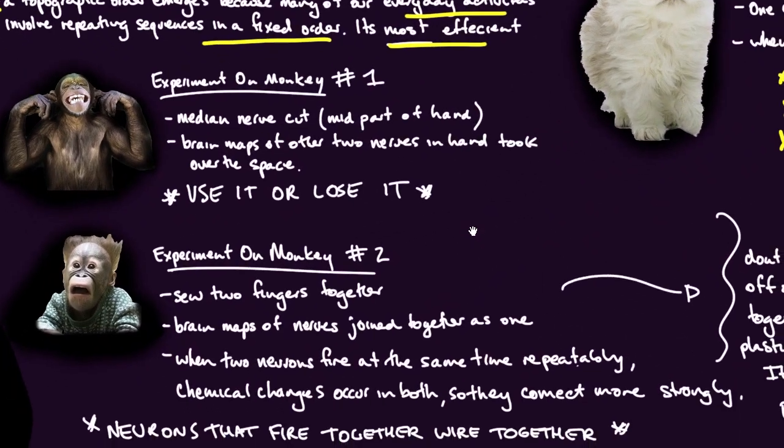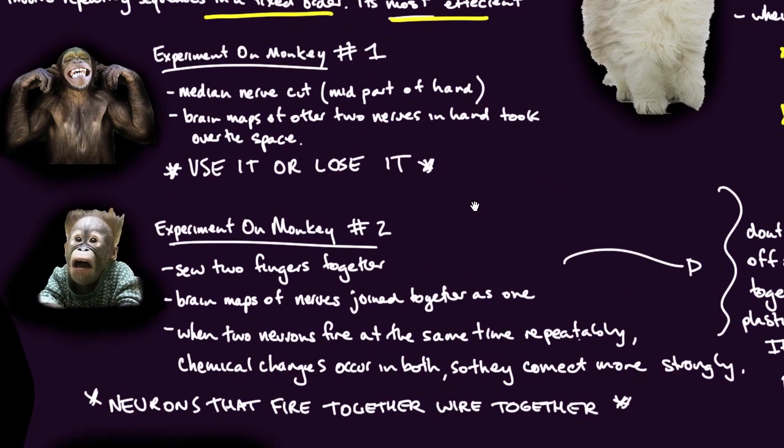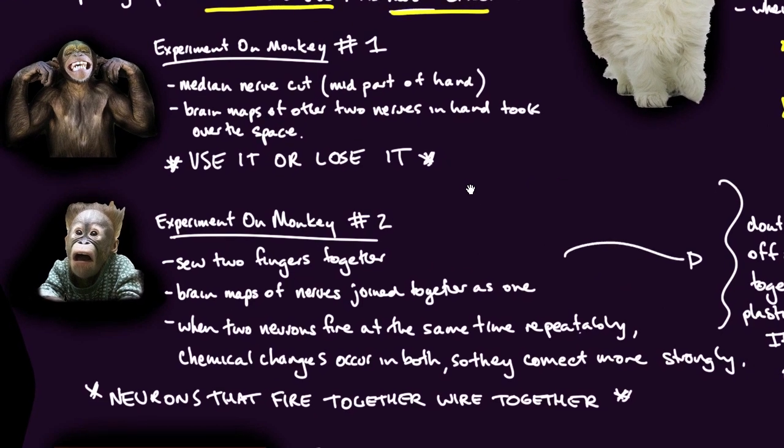Now let's do some more stuff to animals. I say that flippantly, but I'm sure I would have major issues with the monkeys. They're our closest cousin, so this is why a lot of experiments have been done on monkeys for the brain. Experiment on monkey number one: a median nerve was cut in the mid part of the hand, and the brain maps of the other two nerves in the hand took over the space. So we could say there that you use it or lose it.